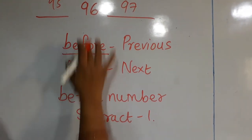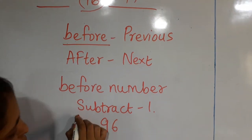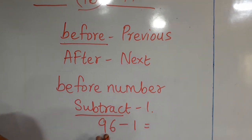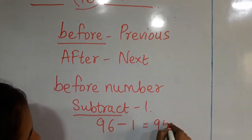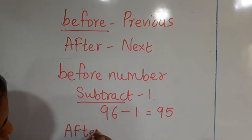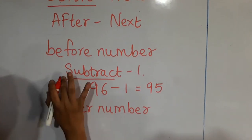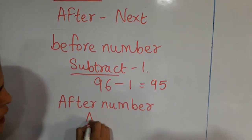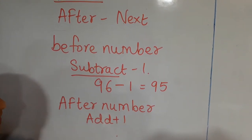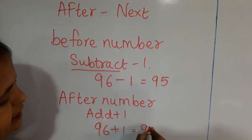The number given here is 96. So from 96 you have to subtract 1. If you minus 1, then the answer will be 95. And if you want to write the after number, you do the opposite — you have to add 1. So 96 plus 1 gives 97.